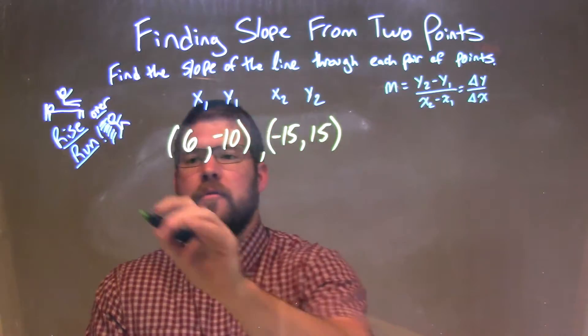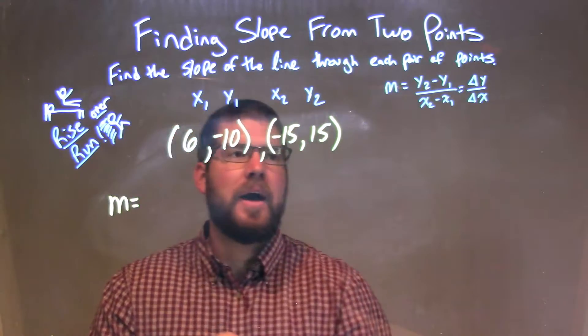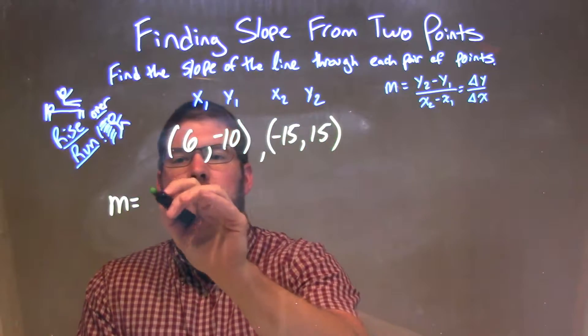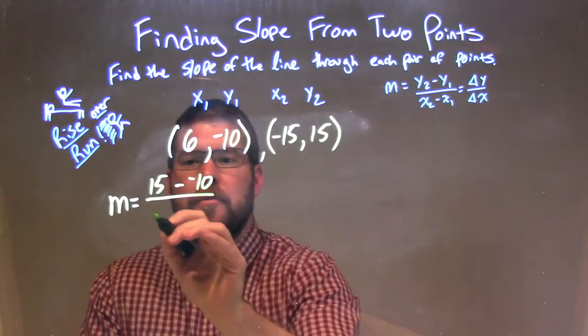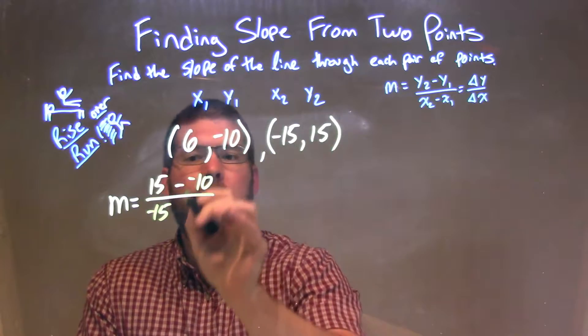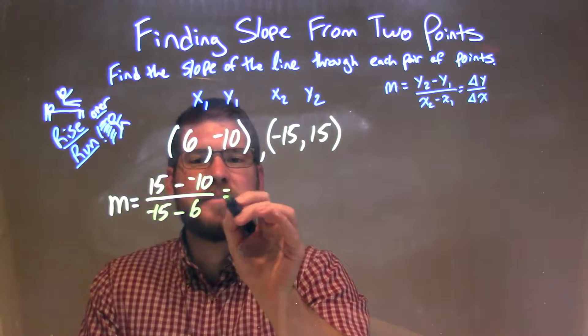So we need to follow our slope formula, our change in y over change of x. Well, y2, 15, minus y1, negative 10, over x2, negative 15, minus my x1, which is 6.